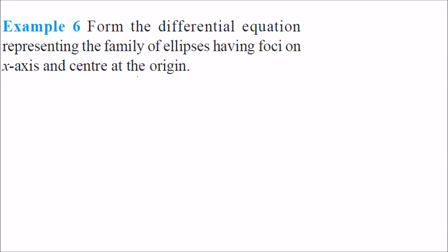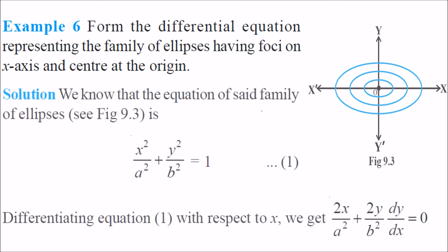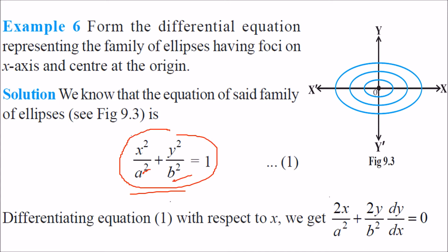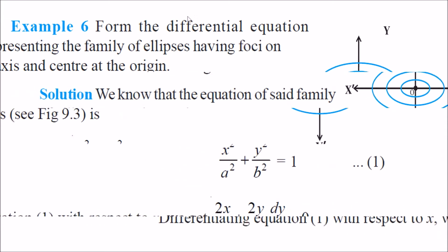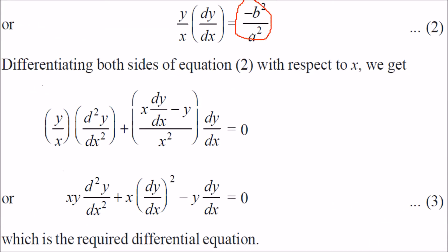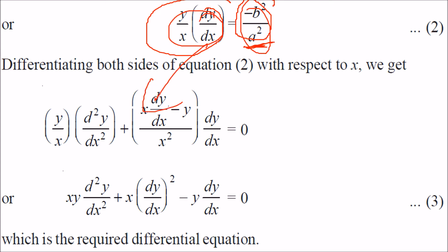Form the differential equation representing the family of ellipses having foci on the x-axis and center at the origin. The ellipse is represented by x square by a square plus y square by b square equal to 1. We have two constants: a and b — the semi-major axis and semi-minor axis. Differentiate it twice. First differentiate and rearrange to get minus b square by a square on one side. Differentiating again eliminates that constant. After rearranging, this is the required differential equation.